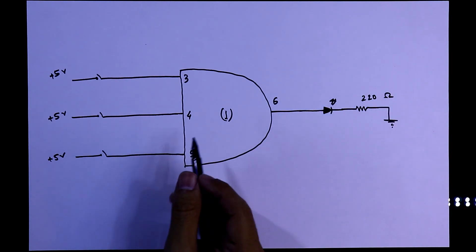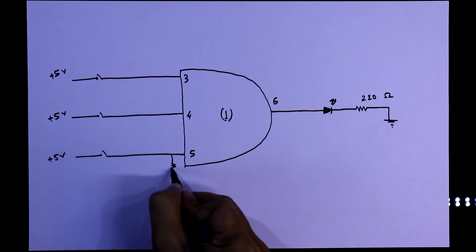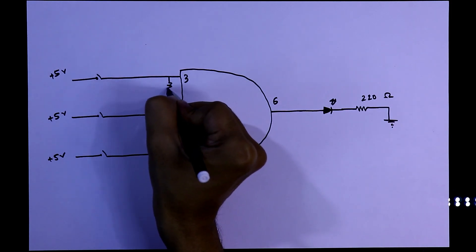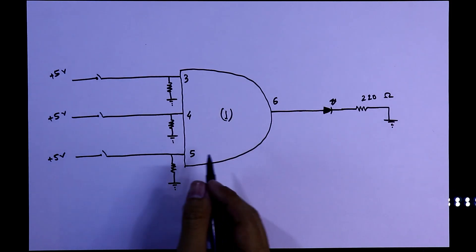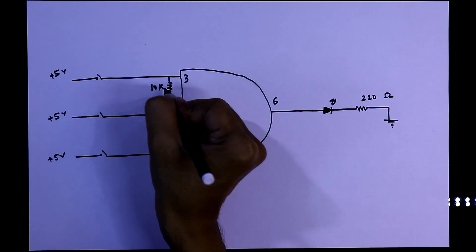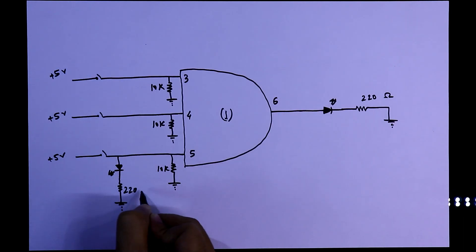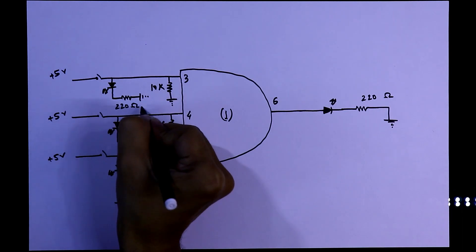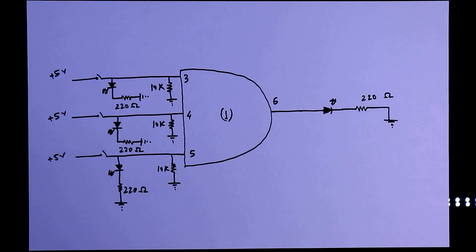We have to connect pull-down resistors with the inputs. I have already explained why we should connect pull-down resistors—link in the description below. The value is 10 kilo-ohms. To see the inputs, we can connect LEDs to all the inputs. This is the circuit. Now let's see this on the breadboard.